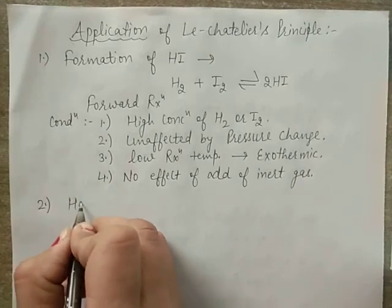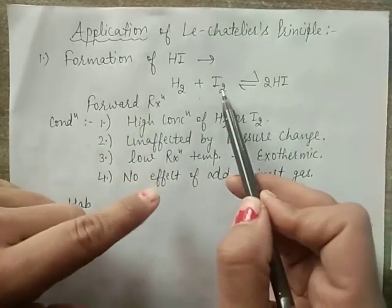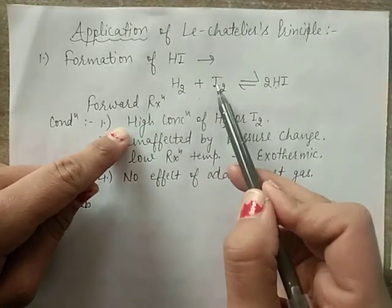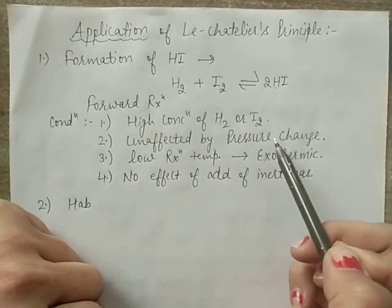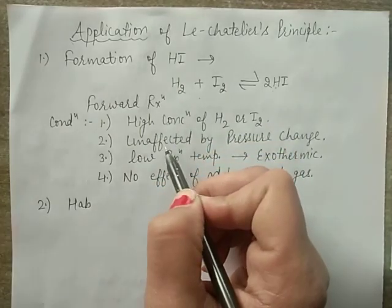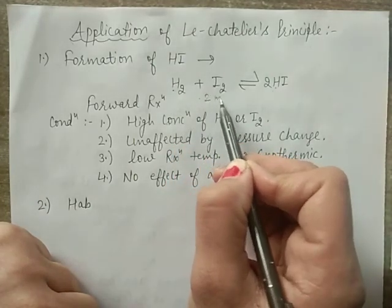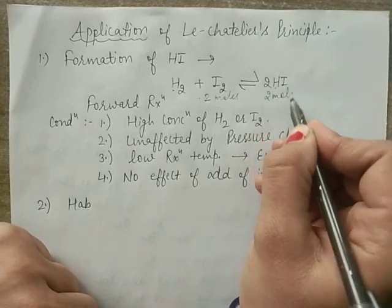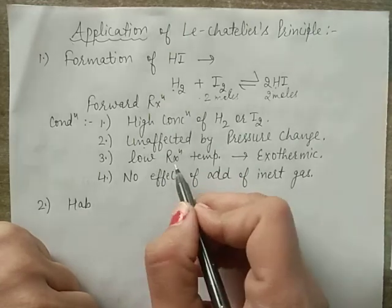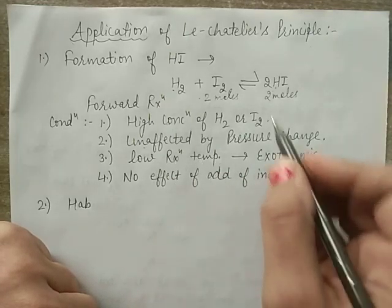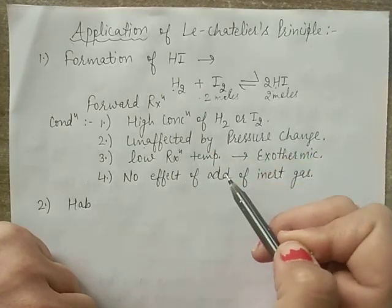Second example — Haber process. For H₂ + I₂ → 2HI: concentration of hydrogen and iodine should be high for forward reaction. Pressure change has no effect because moles on both sides are equal (1+1=2 on left, 2 on right). Low temperature favors forward reaction since heat is released. Addition of inert gas has no effect.